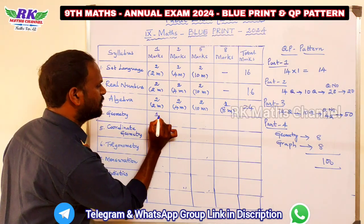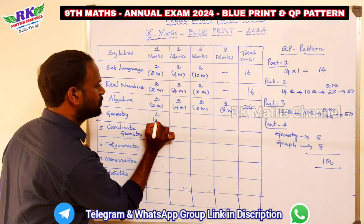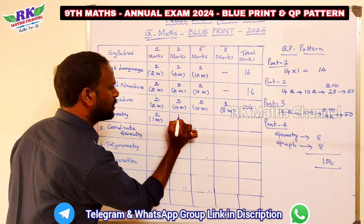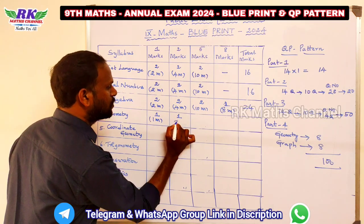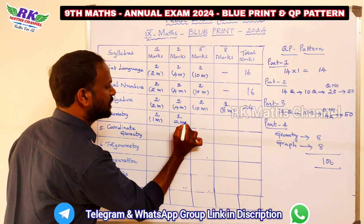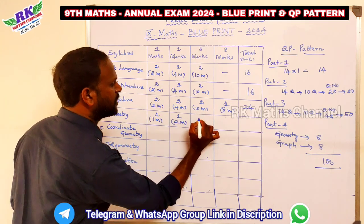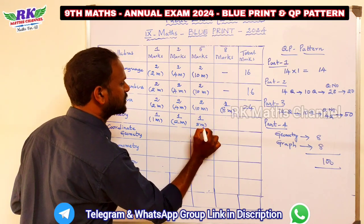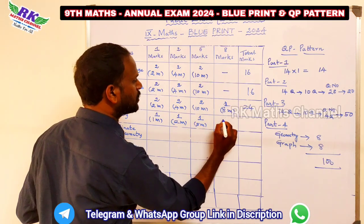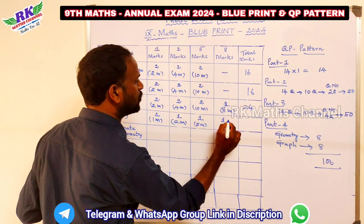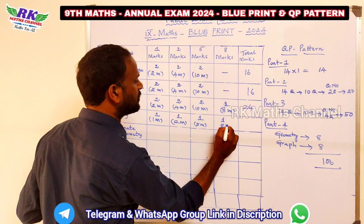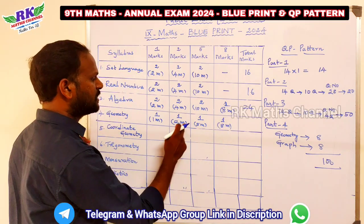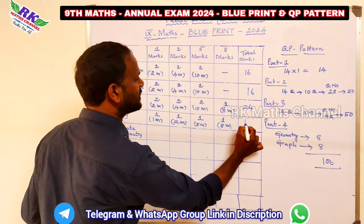Looking at this graph: 1 mark, 1 mark, 2 marks, 5 marks, 1 mark, 5 marks, 1 mark, 5 marks, 8 marks. So the totals come to 8, 10, 15, 16 marks across these sections.